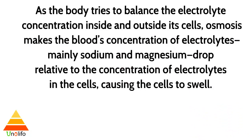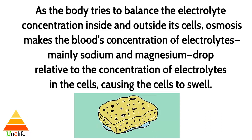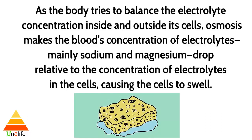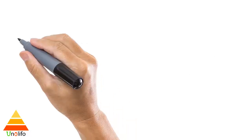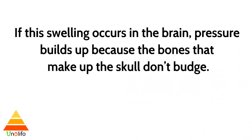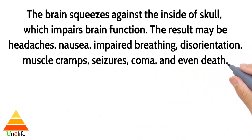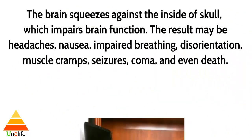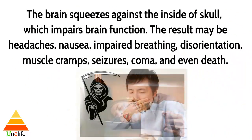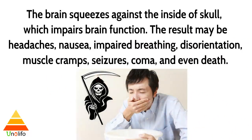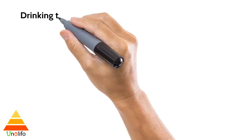Osmosis makes the blood's concentration of electrolytes — mainly sodium and magnesium — drop relative to the concentration of electrolytes in the cells, causing the cells to swell. If the swelling occurs in the brain, pressure builds up because the bones of the skull don't budge; the brain squeezes against the inside of the skull, impairing brain function. The result may be headaches, nausea, impaired breathing, disorientation, muscle cramps, seizure, coma, and even death.